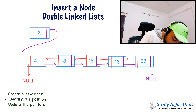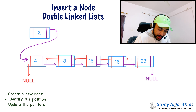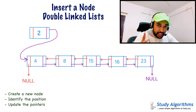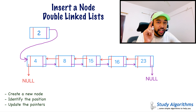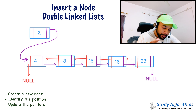Let us first start off with inserting a node in a doubly linked list. If you remember, in a singly linked list, the basic idea was: you create a new node, identify the position where you want to insert, and update the pointers. You need to follow a very similar approach for doubly linked lists as well.